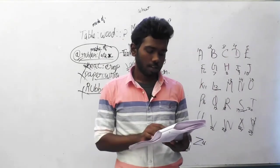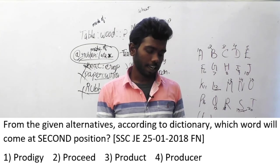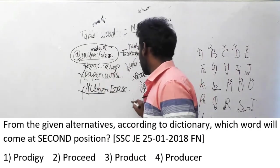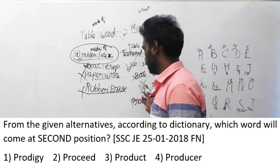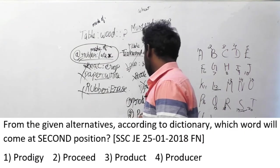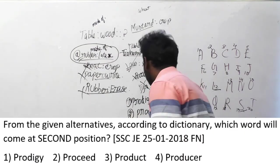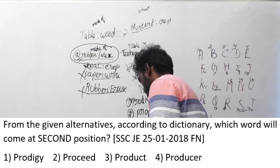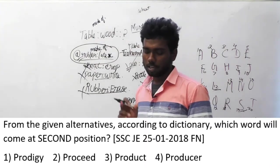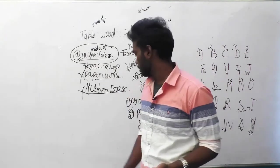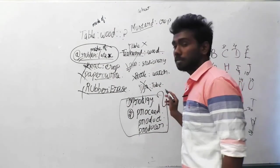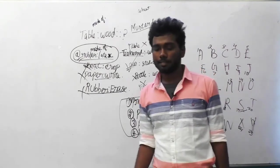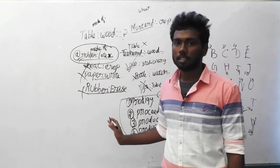Let's go to question number 134. From the given alternatives, according to the dictionary, which word will come at the second position? This question is a little different from the usual arrange-in-sequence type. There is a set of four words, and from these four words you have to find which comes in the second position according to dictionary order.